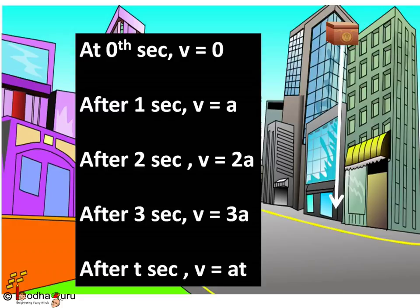This way after t seconds its velocity increases to at. So the box falling from higher place gets more time to accelerate, hence gains more velocity.